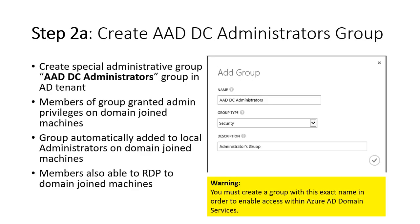Let's look at creating the AAD group in more detail. You create the group, and special permissions will be required for the AAD admin. Members of the group can be granted the privilege of domain-joining machines. Groups are automatically added to the local admin, and members will be able to RDP. Important warning: you must create a group with the exact name 'AAD DC Administrators' in order to be able to access Azure AD domain services — it has to be the exact name.